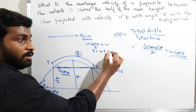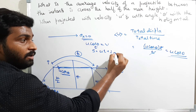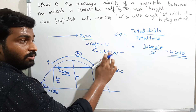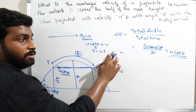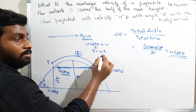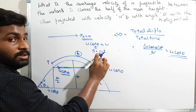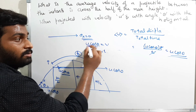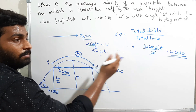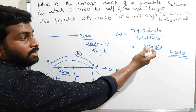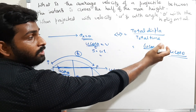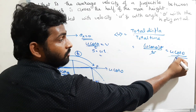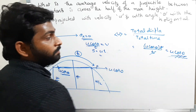We can also confirm this using the displacement formula: s = ut + ½at². Since acceleration is zero, the second term vanishes. The velocity u here is u cos θ, so displacement equals u cos θ × T. Therefore, average velocity equals displacement divided by time T, which gives u cos θ. The answer is confirmed: the average velocity is u cos θ.